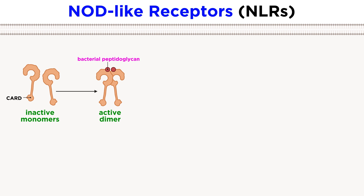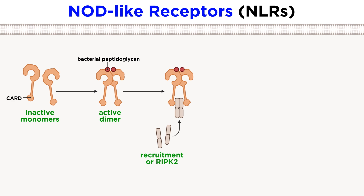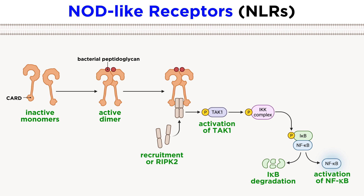However, instead of having a TIR domain, they have an aminoterminal CARD domain, which is a docking site for other proteins with CARD domains. NLRs recognize components of peptidoglycan from both gram-positive and gram-negative bacteria. When the NLR senses its target, a protein called RIPK2 binds to the NLR's CARD domain. This leads to downstream activation of TAC1, IKK, and then NF-kappaB, similar to the TRIF-dependent pathway of TLR signaling.